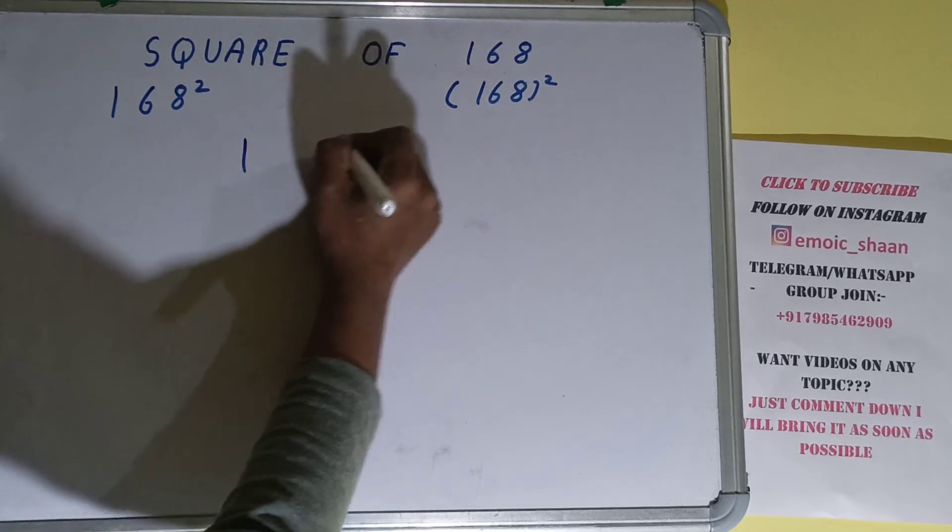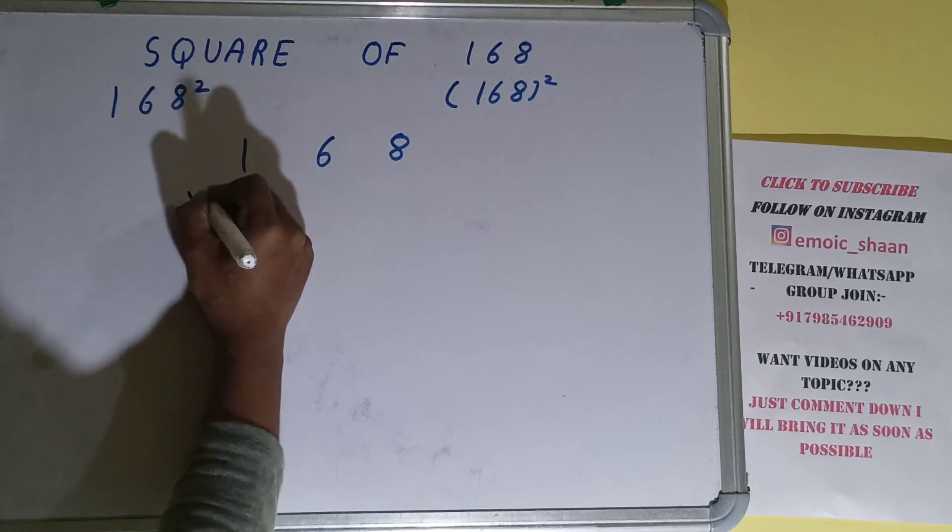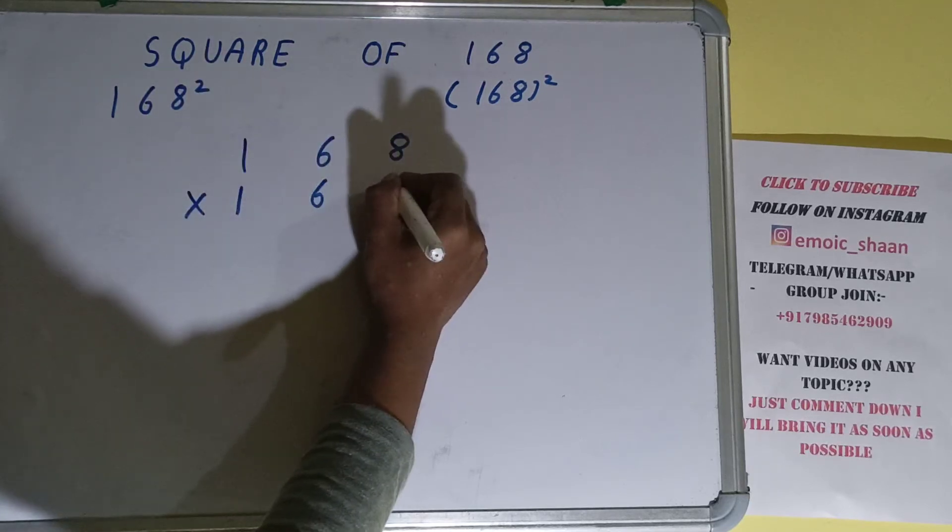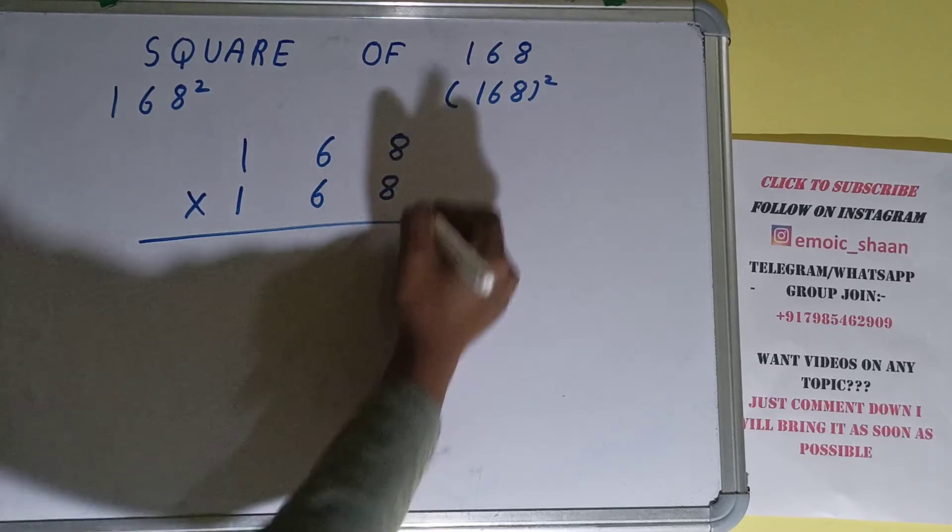Square basically means multiplying the number by itself. The number here is 168. To find the square of it, we need to multiply it by itself - that is, 168 - and do normal multiplication. Let's begin with this: 8